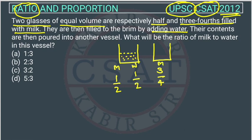Similarly, 3 by 4 is milk. So how much will be the water? Water will be 1 by 4. In this, from this level till this level, they have milk. So water will be only 1 by 4.